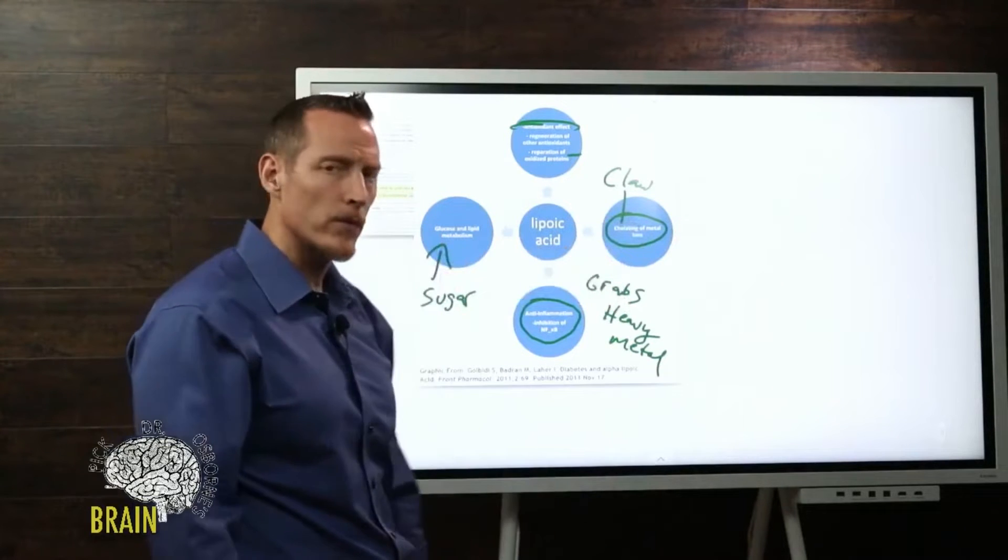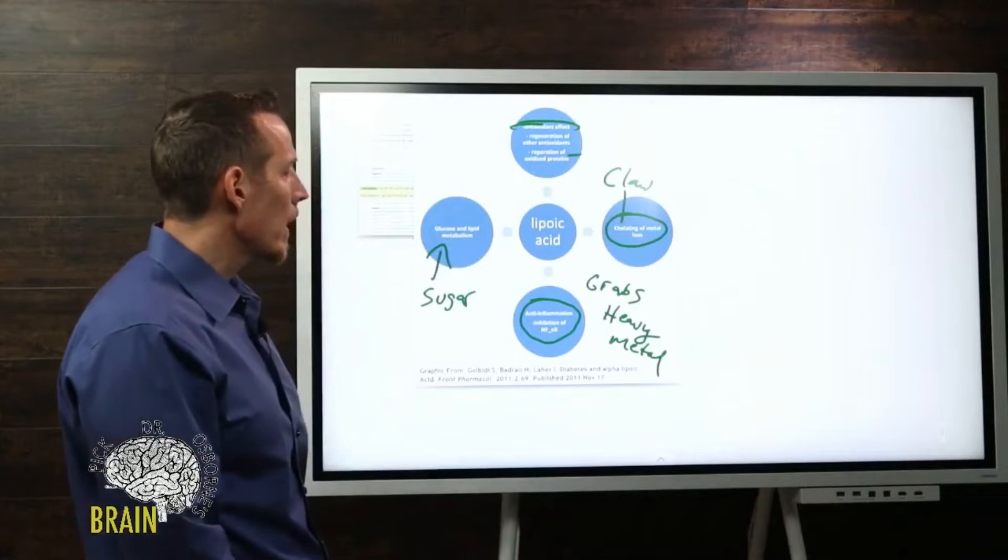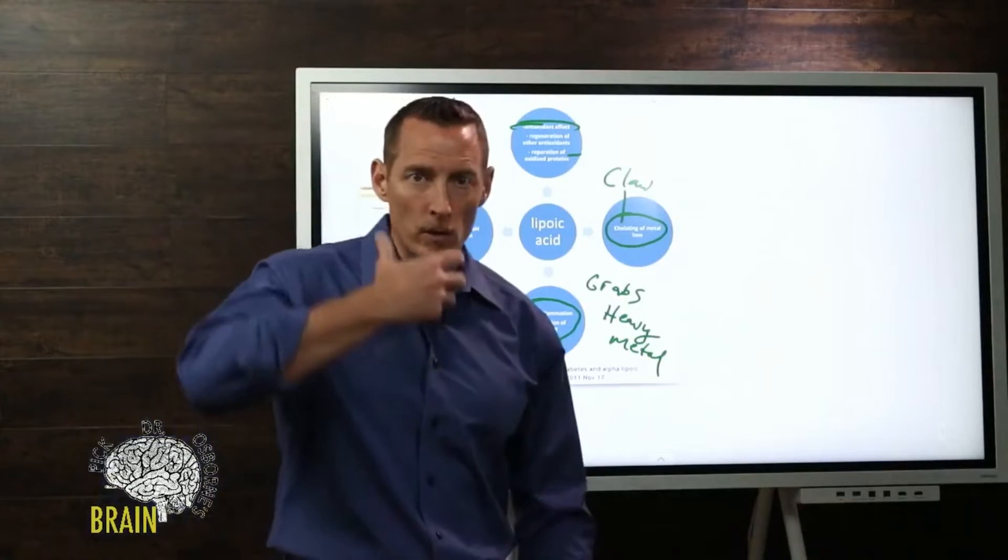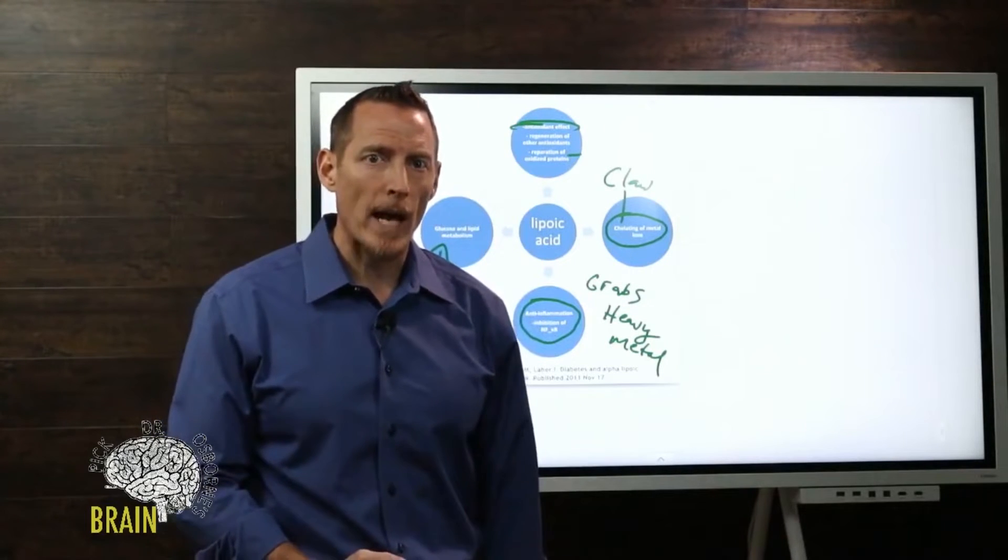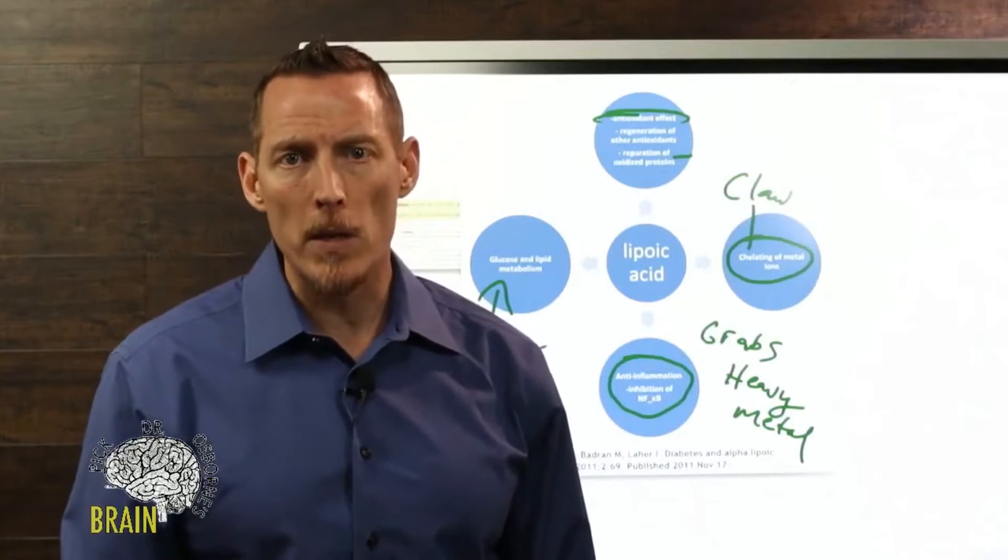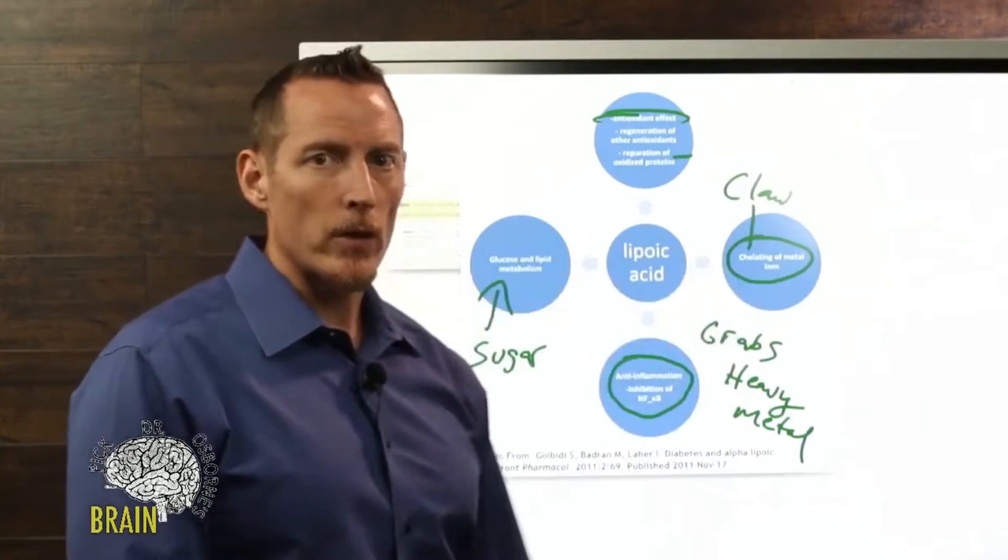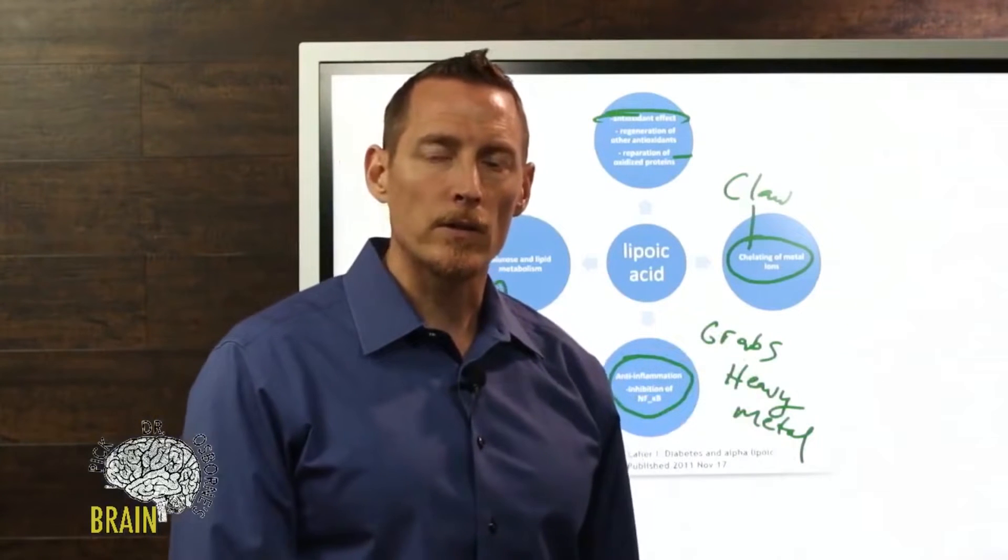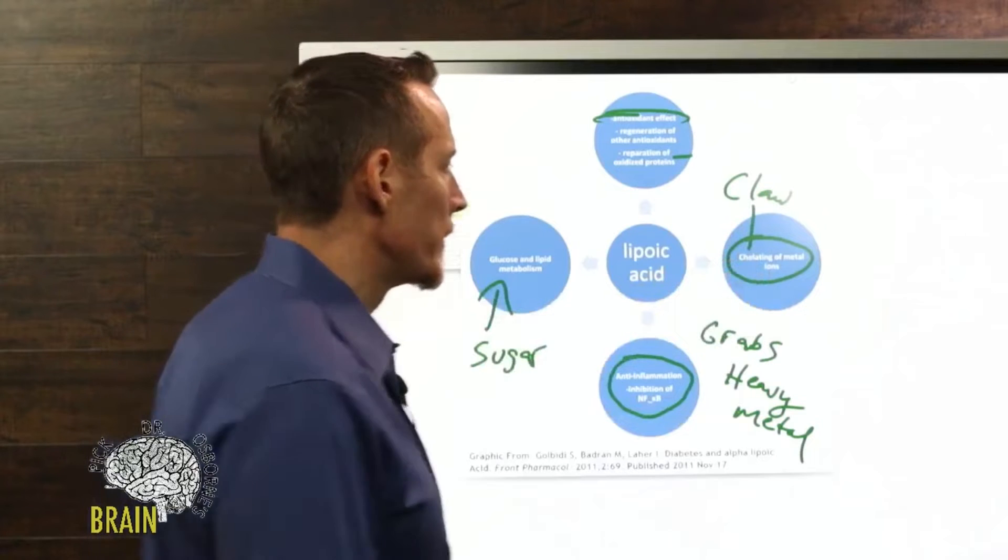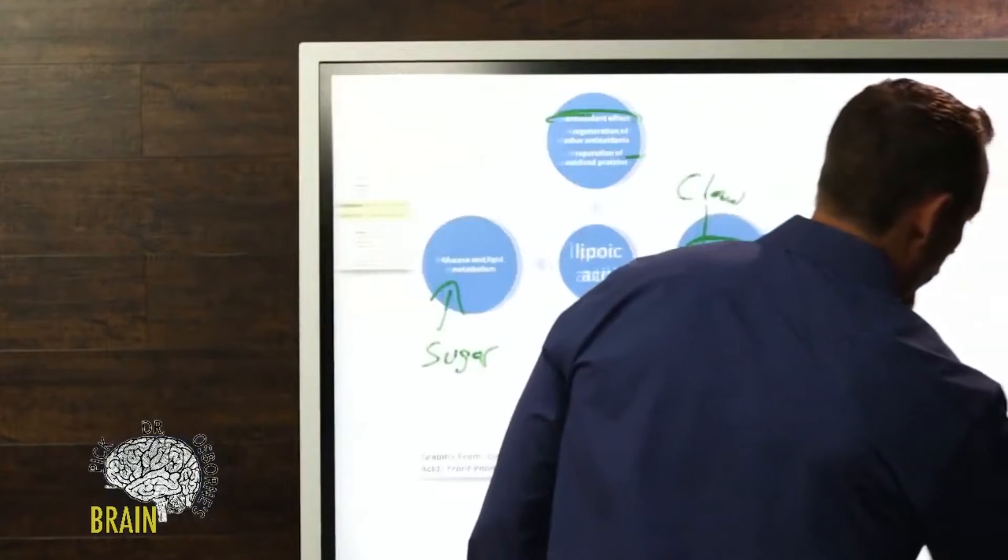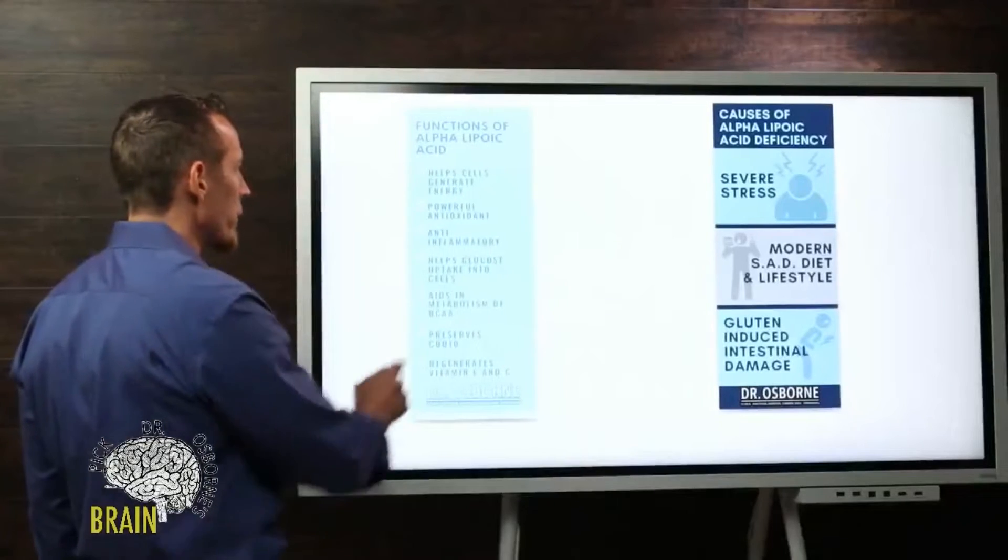It can be a helpful chelating agent. If you've got a history of silver amalgams or mercury fillings in your mouth and you're considering using something to help pull some as you get those fillings removed by a good environmental or biological dentist, alpha lipoic acid might be something your dentist would recommend as a chelating agent to help prevent that mercury from creating a major toxicity in your body.